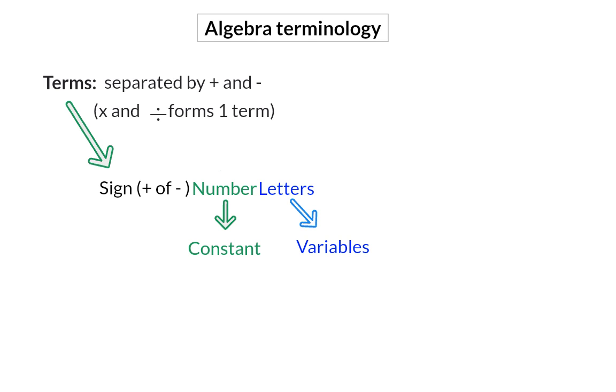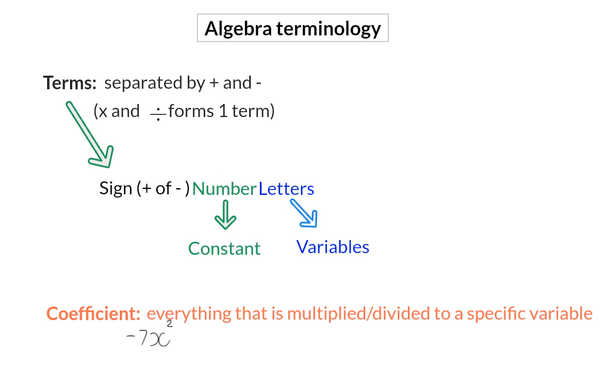Another new word that we are going to use is the word coefficient. Coefficient consists of everything that is multiplied or divided to a specific variable. So, if we, for example, look at a term like minus 7x squared, and I ask you, what is the coefficient of x squared, it will be the sign, the minus, and the 7 that is multiplied to x squared.